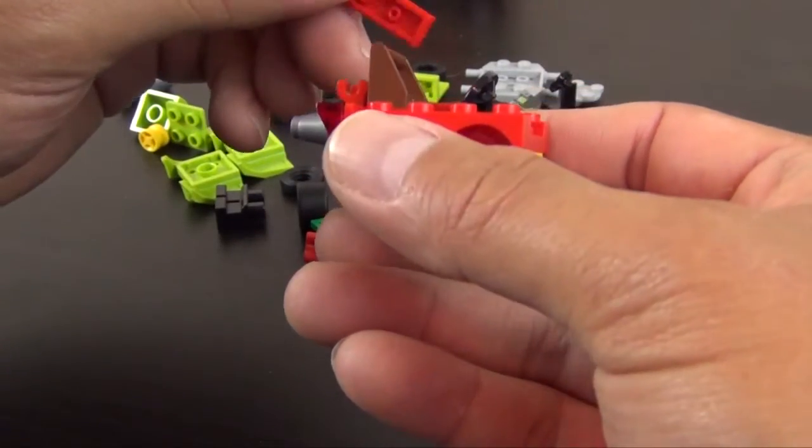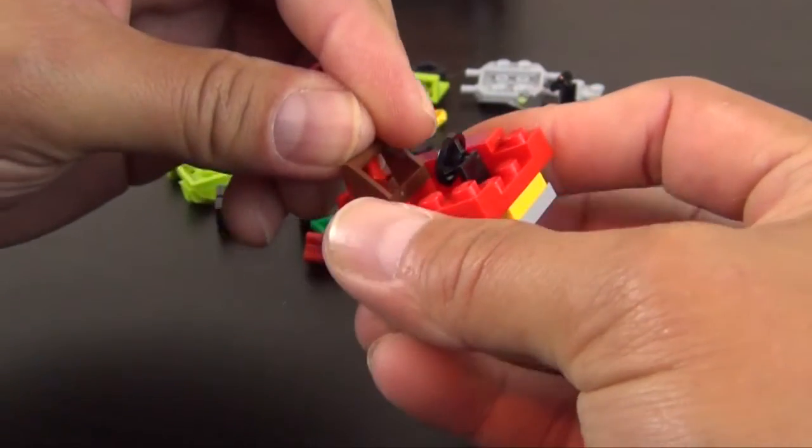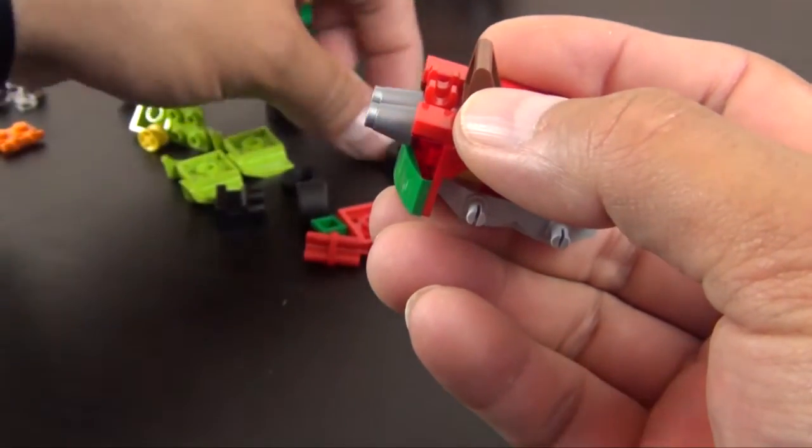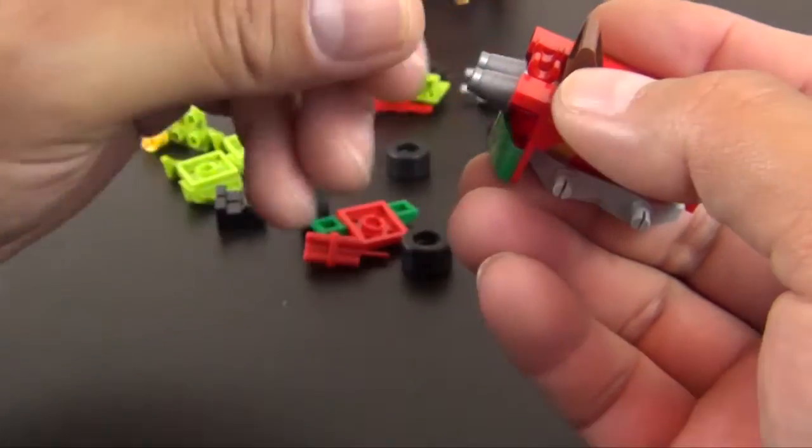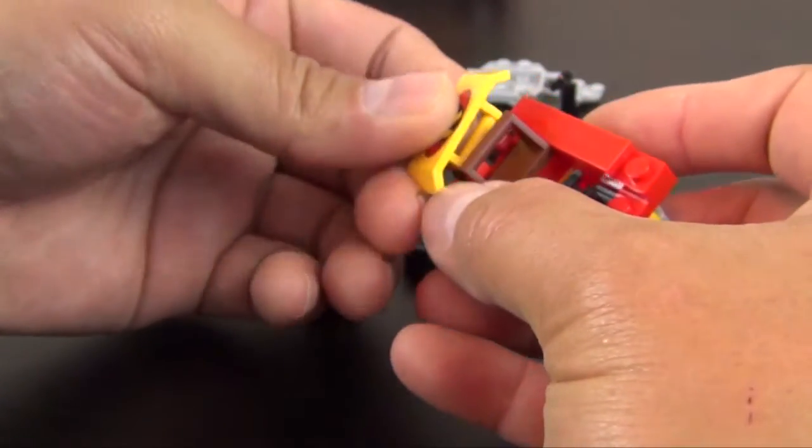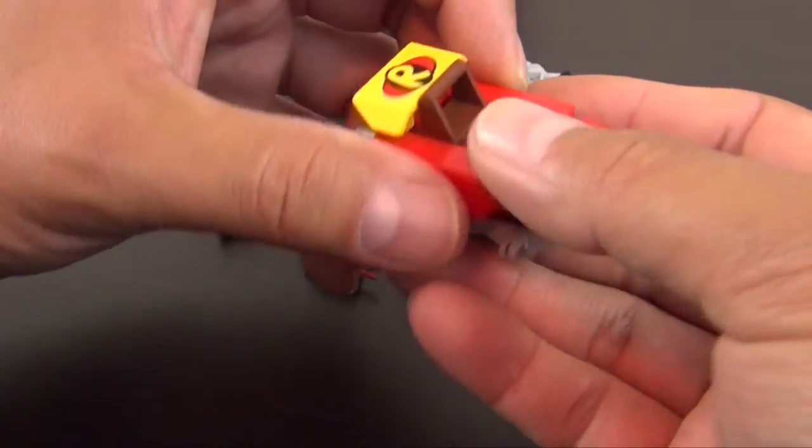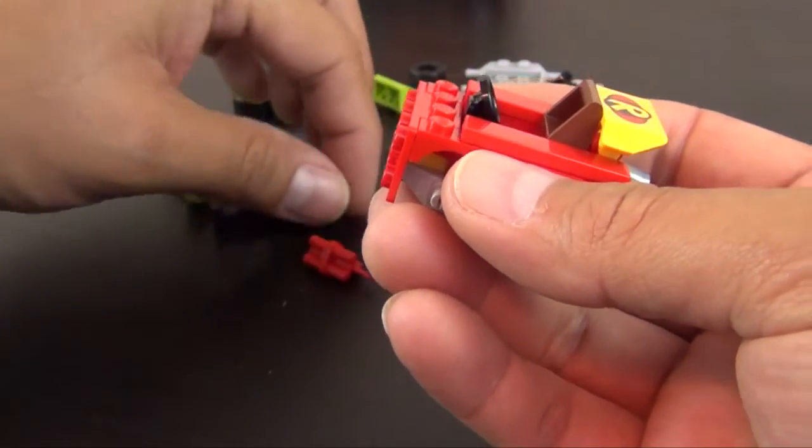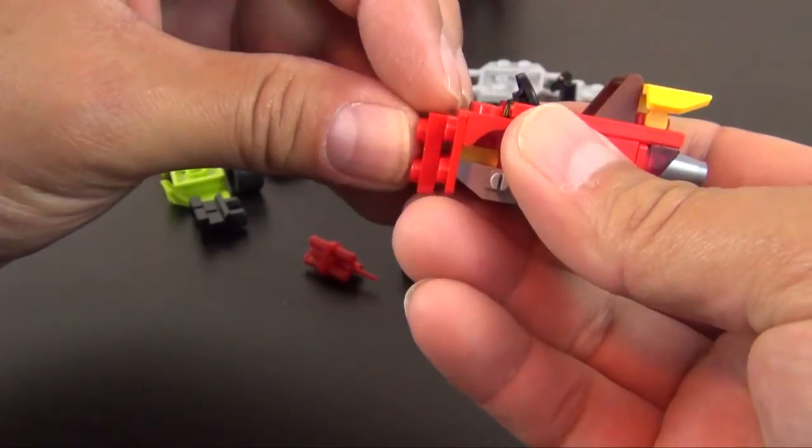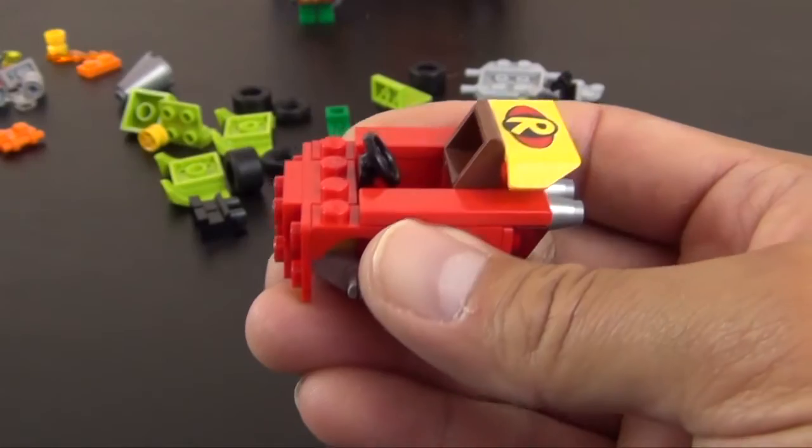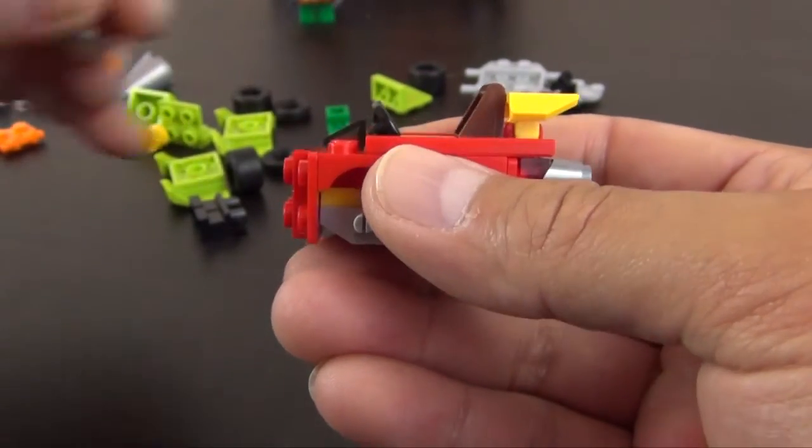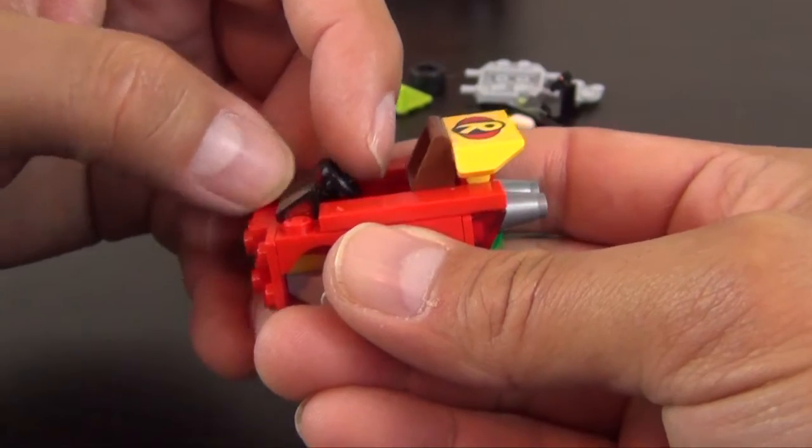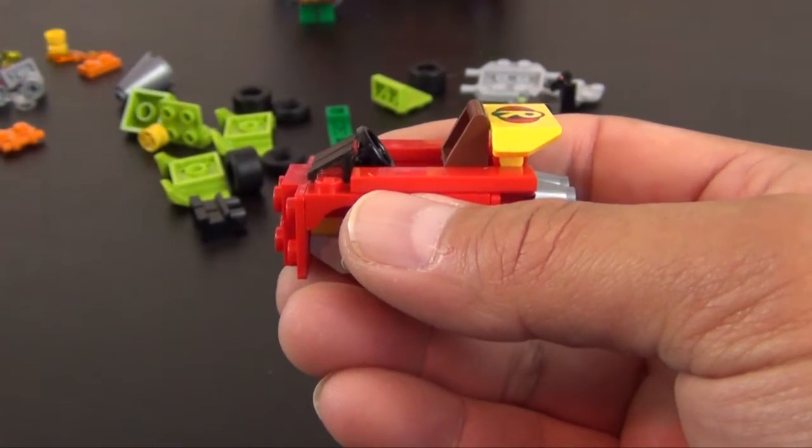Some trans red cheese slopes. Turn the instruction book over, we're on the back side now. These tiles kind of help hold it on. This is cool, we have a Robin printed rear wing. It's not really a robin, it's just an R, but that's kind of his little logo. So there's no stickers in this set. I think none of the Mighty Micros come with stickers, so anything that's decorated is going to be a print.